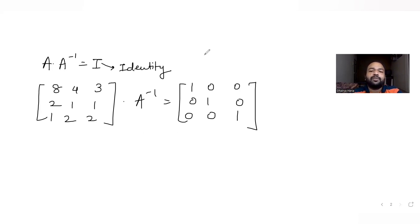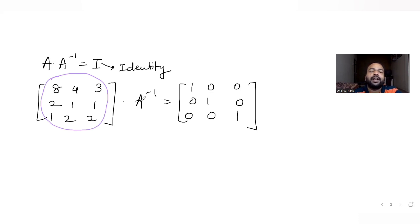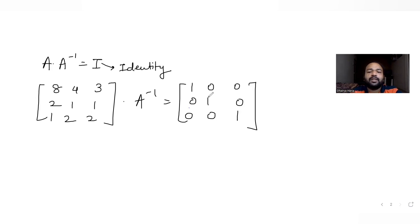To use elementary row transformations to find the inverse, we need to convert matrix A into the identity matrix. Whatever changes happen to the identity matrix side will give us A inverse. The trick is to make the first element 1, then make the other elements in that column 0, then move to the next diagonal element.